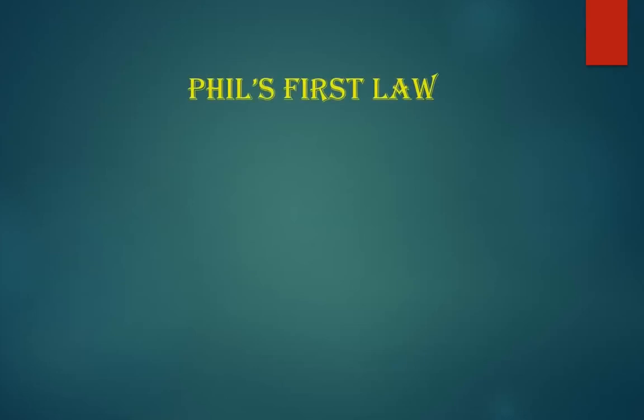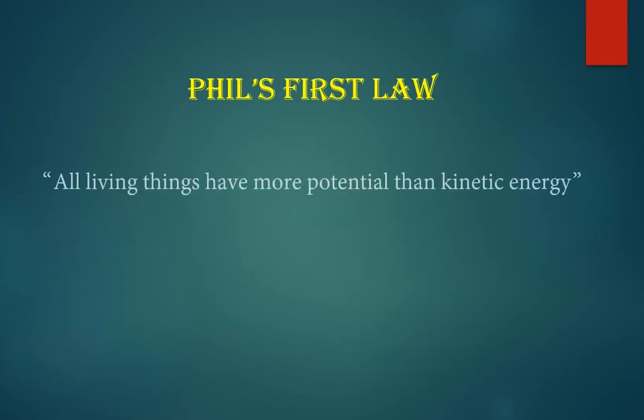The Usain Bolt example applies to all living things. Any living thing is going to have a huge amount of stored chemical potential energy — you can move around all day long and you still have the energy to survive. People can live without food for several weeks as long as they have water because they have so much stored chemical potential energy. This gives rise to what I call Phil's First Law for Chapter 7: all living things have more potential than kinetic energy. So if you're taking a quiz or exam and it's a living thing — whether it's an animal, a plant, or a person — your answer is going to be potential energy.